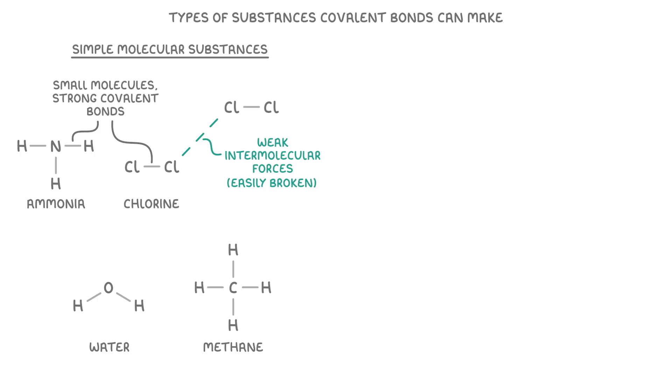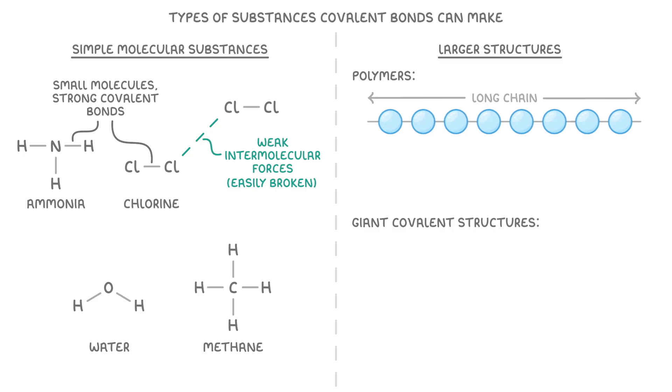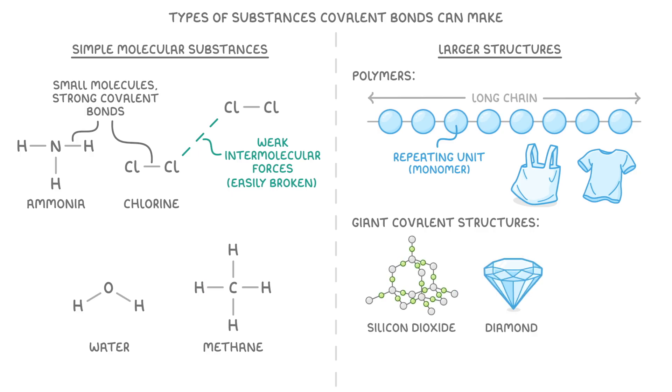Covalent bonds can also be used to make much larger structures though, such as polymers and giant covalent structures. We cover both of these in other videos, but basically polymers are long chains made up of lots of repeating units which we call monomers and are used to make things like plastic bags and t-shirts. Meanwhile, giant covalent structures are things like silicon dioxide, diamond, and graphite.